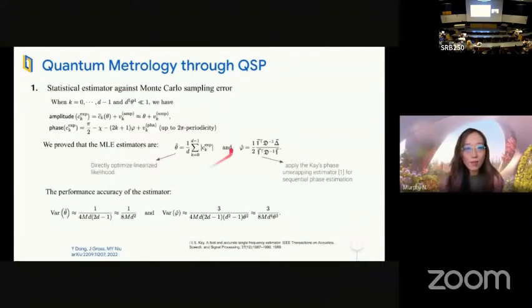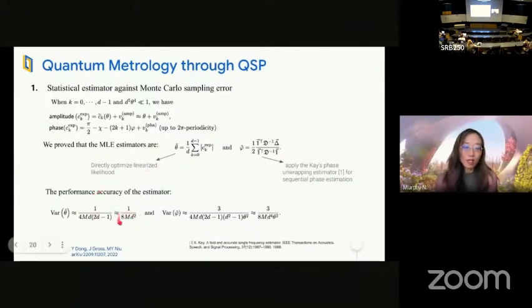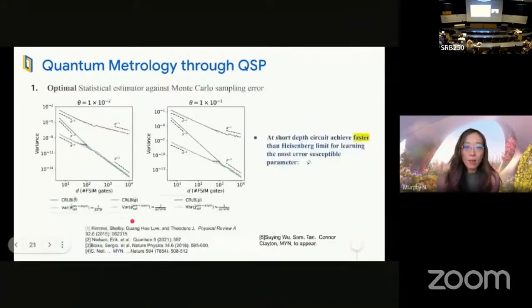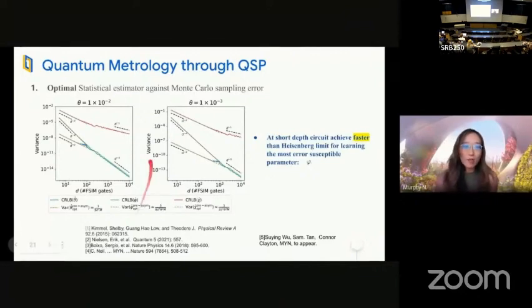we show that we have a very simple estimator for the parameters we would like to learn, theta and phi. Our estimator is, in fact, maximum likelihood estimator, and it's optimal in regard to its variance compared to classical Cramer-Rao bound. This means our estimator is optimal in regard to the post-processing for the given measurement circuit.